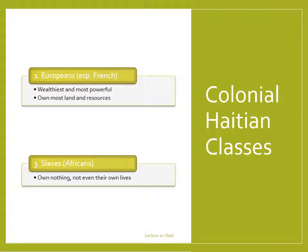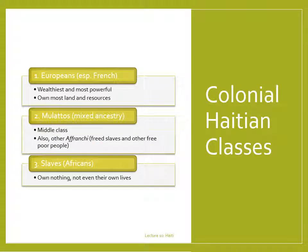At the bottom of the social hierarchy was the slave class—those of mostly West African ancestry, who literally owned nothing, not even their own lives. In between were the mulattoes, a middle class of free, biracial people with mixed European and African ancestry. Another lower middle class, called affranchi, was made up of freed slaves, poor disenfranchised whites, and others with little political or social influence.